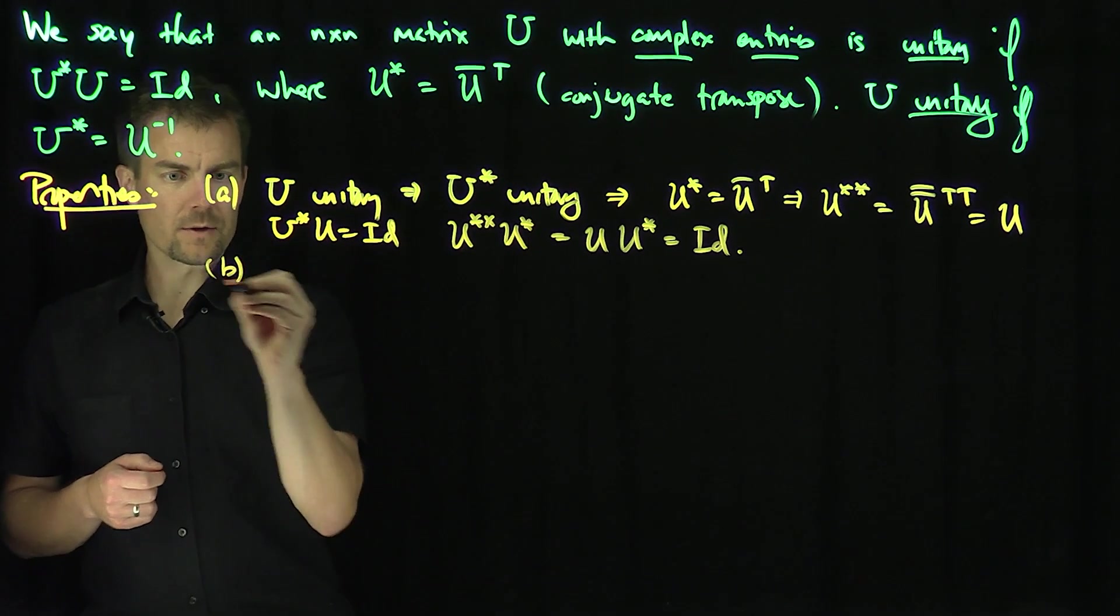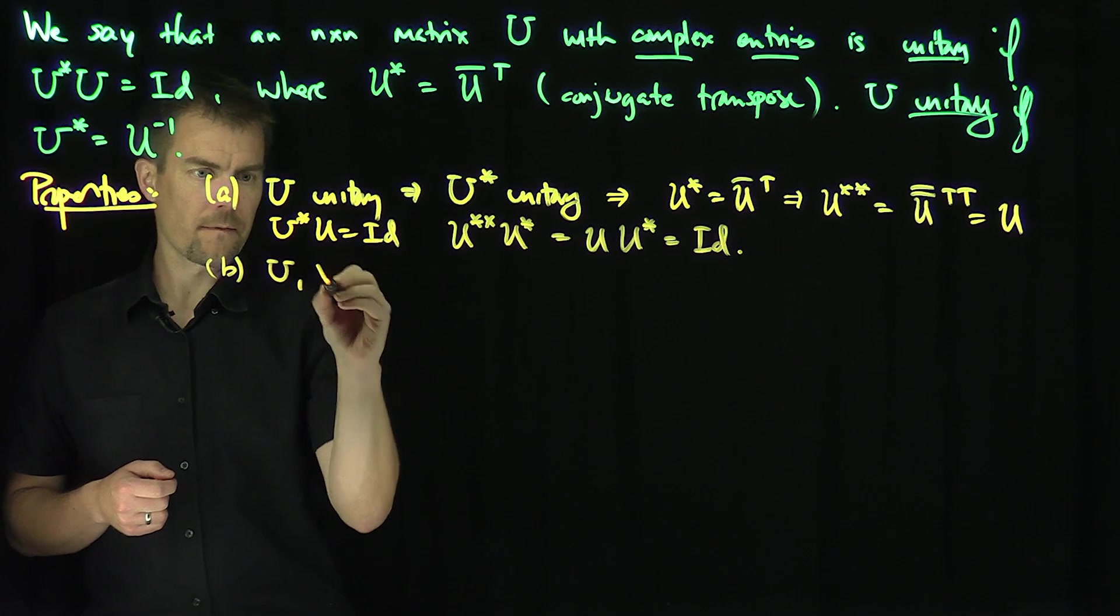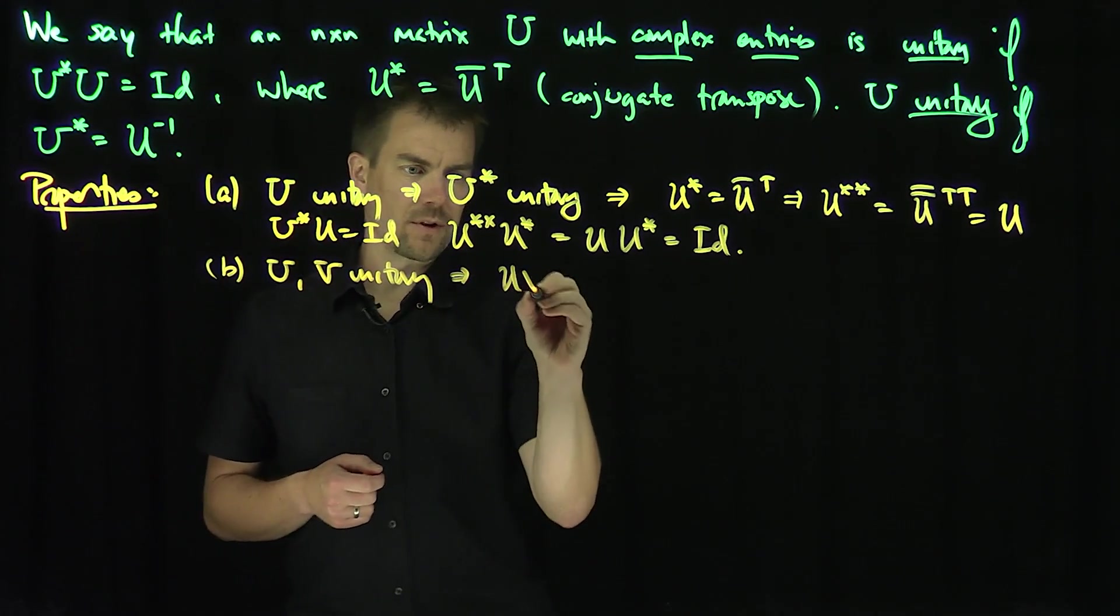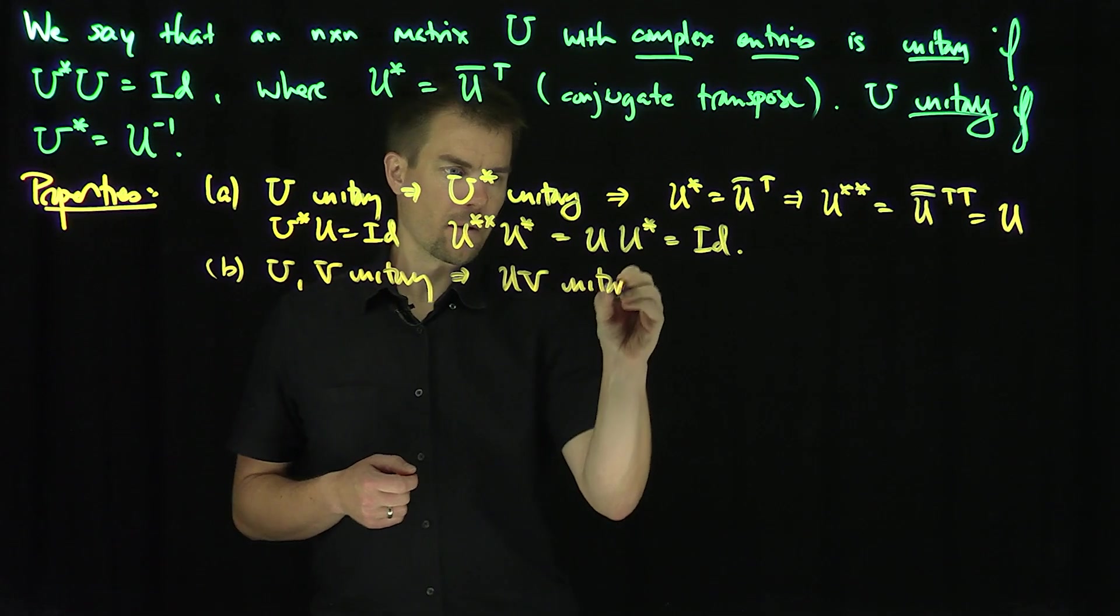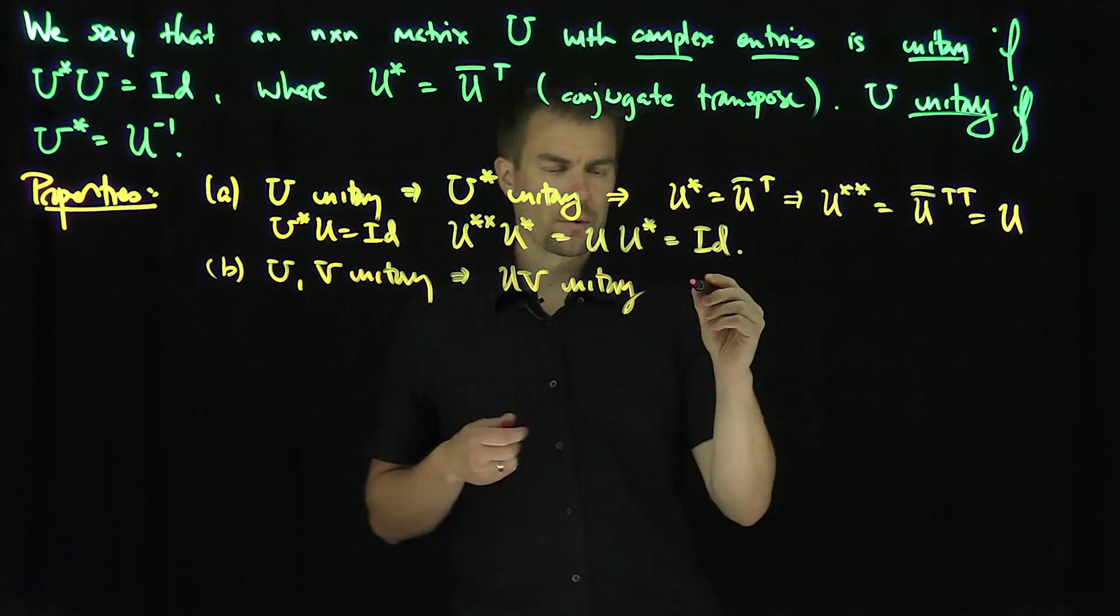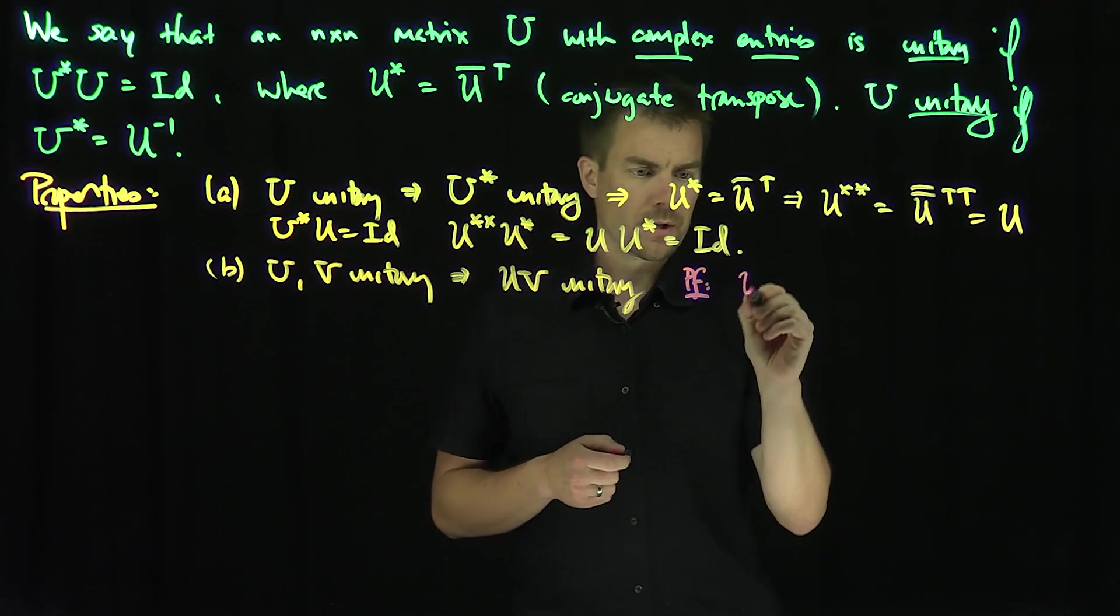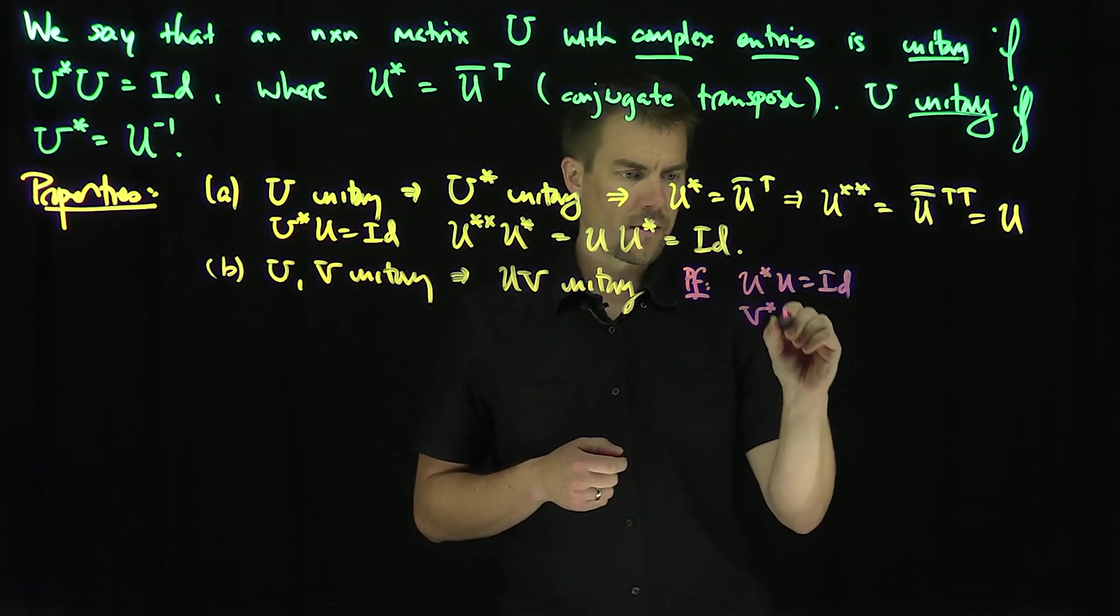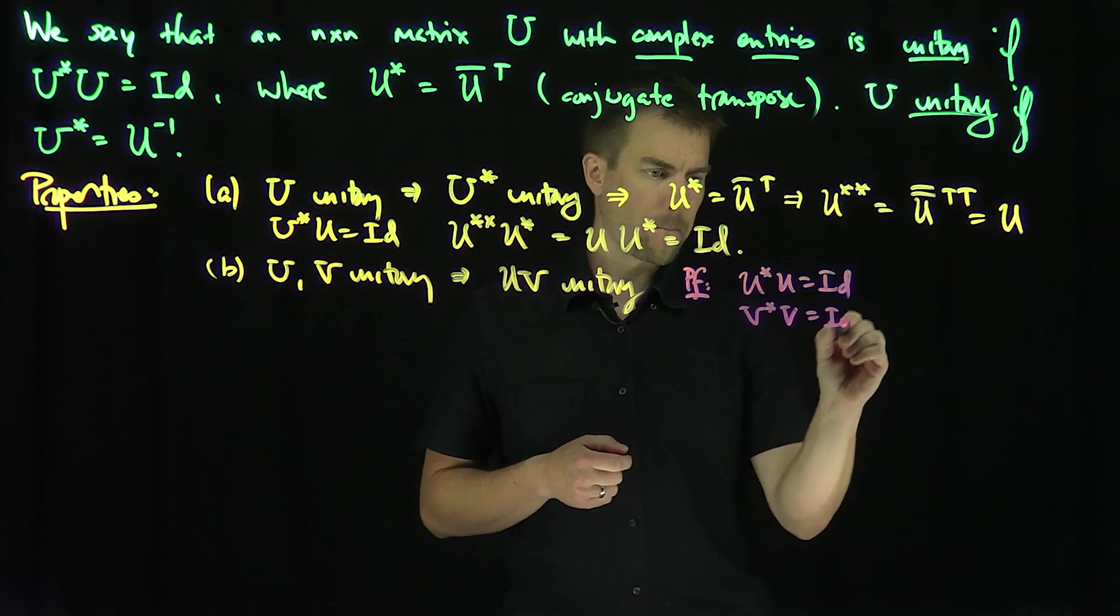So what can I say about B? If U and V are unitary, that implies that U times V is unitary. And so how do we prove something like that?